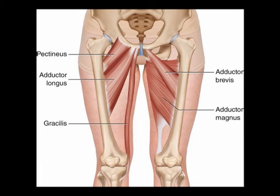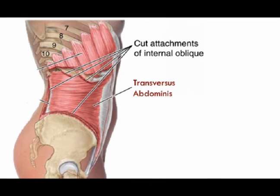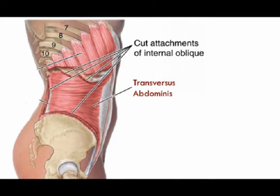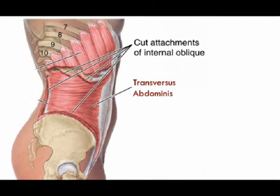The abdominal muscles create a rigid cylinder around the spine during movement and provide stability. The transverse abdominis is the deepest of the core muscles. Activity of the transverse abdominis is recorded during the entire range of spinal flexion and extension. This co-activation is necessary to maintain spinal stability.